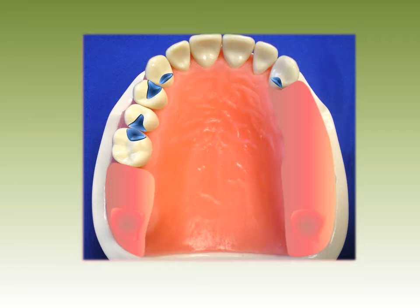A cingulum rest is placed on the lingual of numbers 6 and 11. That puts our fulcrum line as shown in the illustration.